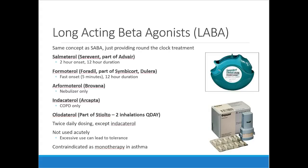Most long-acting beta agonists are twice-daily dosed; indacaterol is once daily but rarely used. These are fairly uncommon as monotherapy. In COPD you might see them early as a single therapy. You should never see them as monotherapy in asthma — they've been shown to increase mortality, possibly by interfering with short-acting medications during an exacerbation. They are an appropriate therapy in asthma, just not as monotherapy; an inhaled corticosteroid must also be on board.